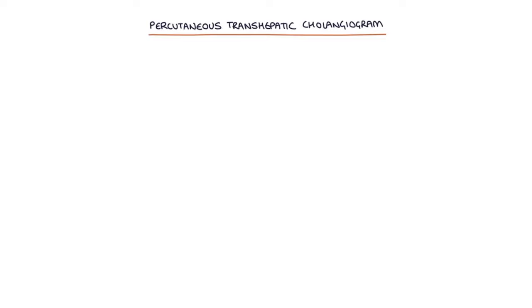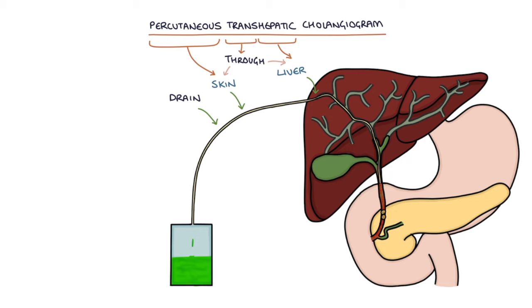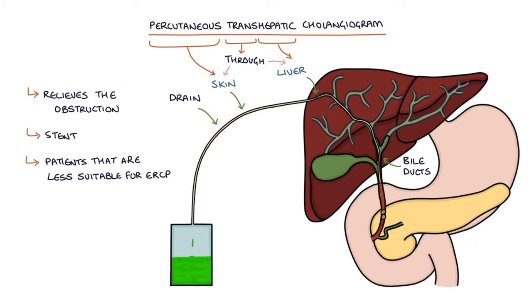Percutaneous transhepatic cholangiogram or PTC involves radiologically guided insertion of a drain through the skin and the liver into the bile ducts. The drain relieves the immediate obstruction, and a stent can be inserted to give longer-lasting relief. This is an option for patients less suitable for an ERCP procedure or where the ERCP procedure has failed.